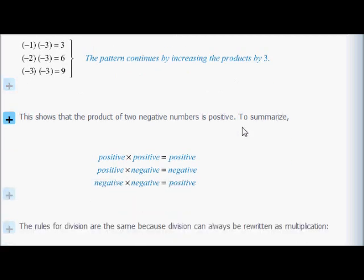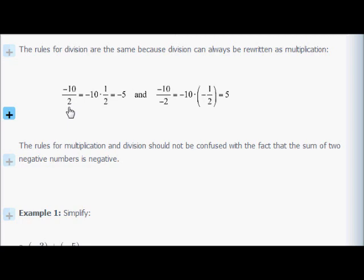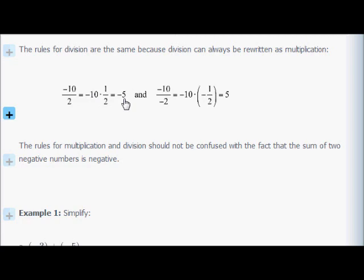The rules for division are the same because division can always be rewritten as multiplication. Negative 10 divided by 2 is the same as negative 10 times one half, which is negative 5 — negative divided by positive is negative. And negative 10 divided by negative 2 is the same as negative 10 times negative one half, so negative times negative is positive.